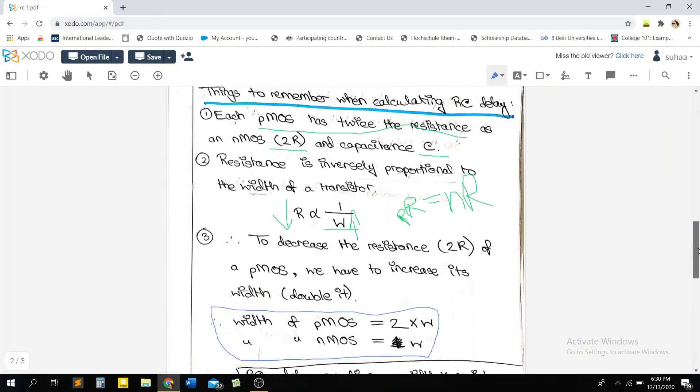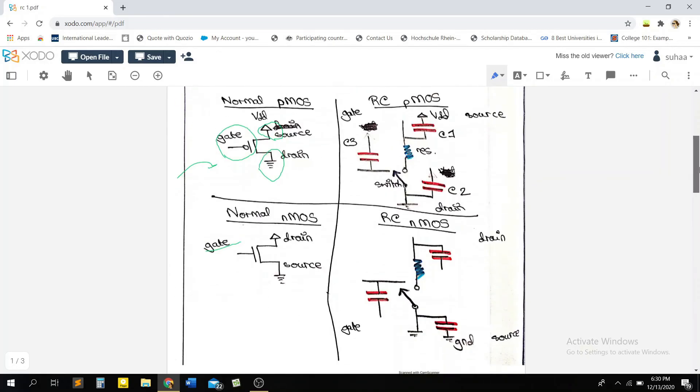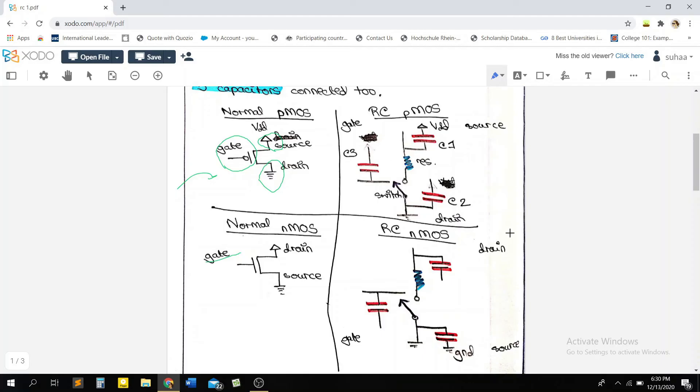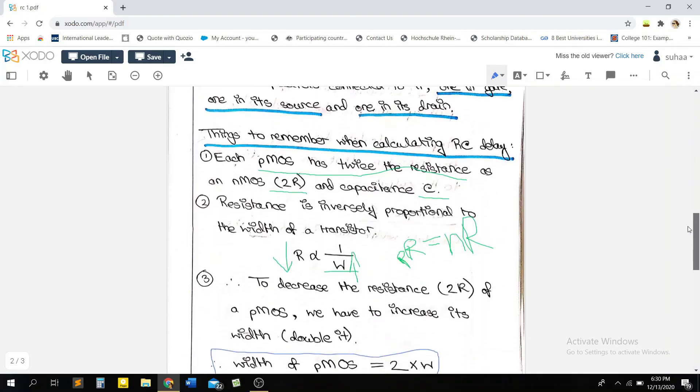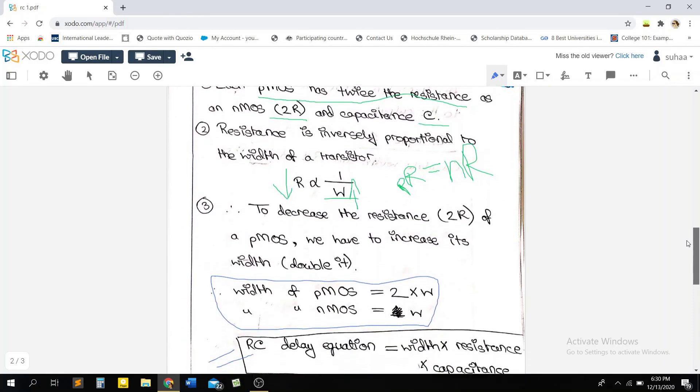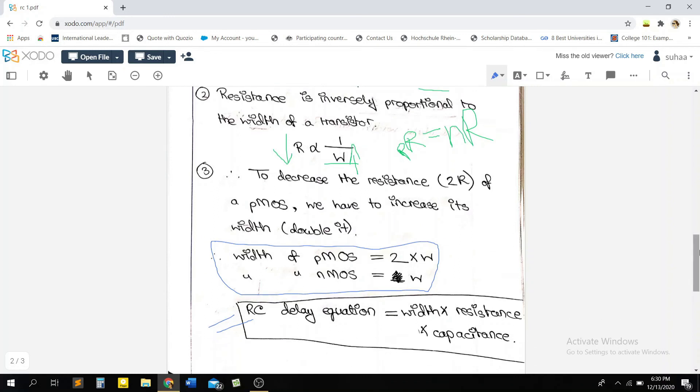And quick recap. So what we learned till now is that PMOS and NMOS is represented like this. The width of a PMOS is twice that of an NMOS. And this is because the resistance of a PMOS is twice that of an NMOS. This is the RC delay equation.